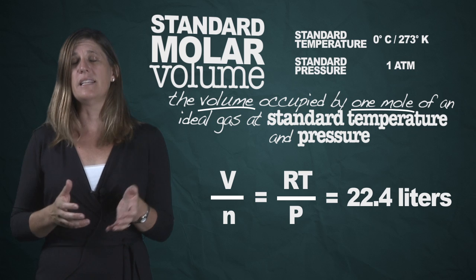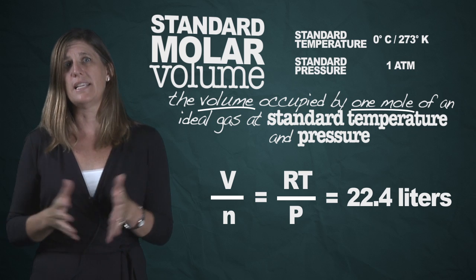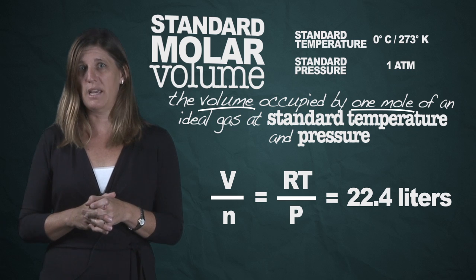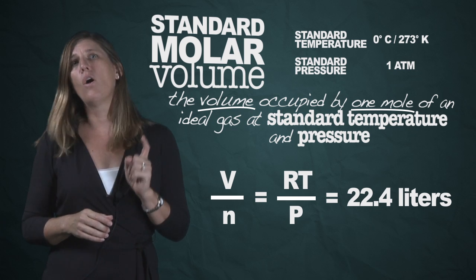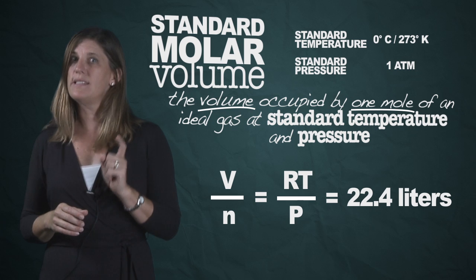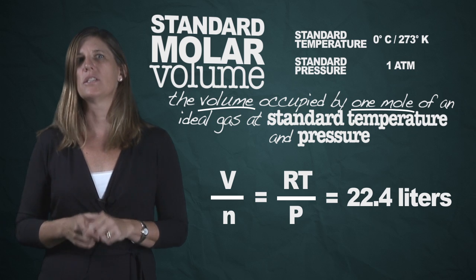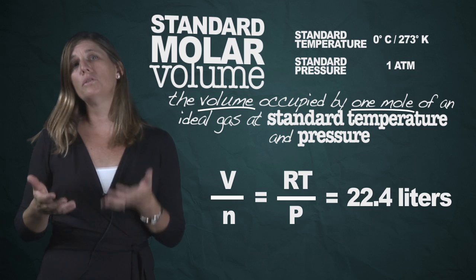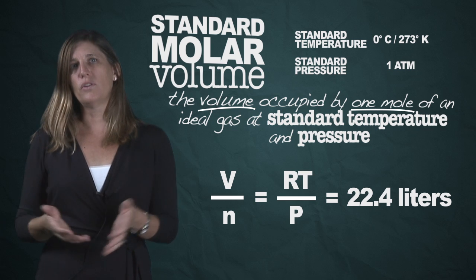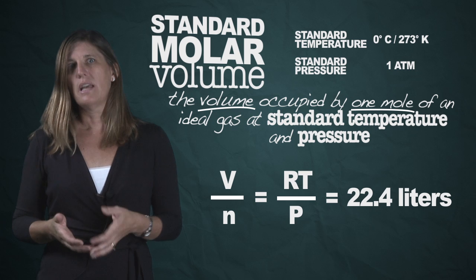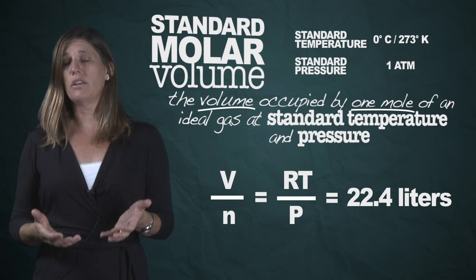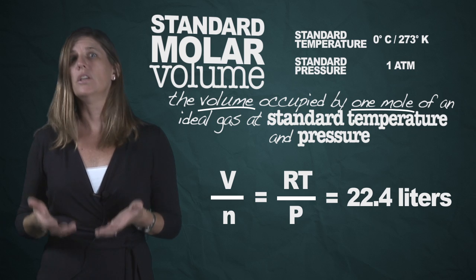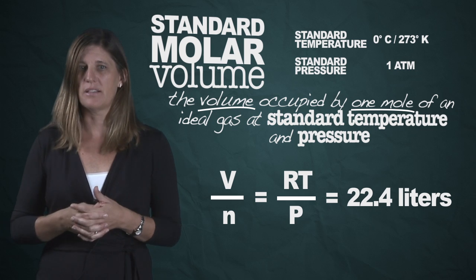So any ideal gas — one mole of any ideal gas — takes up 22.4 liters of space. Now, that only works if you are at standard conditions: standard temperature and pressure. If you change the temperature or you change the pressure, the volume of your gas is going to change. So if you want to calculate the volume of one mole of a gas at a different temperature or pressure, you're going to have to use the ideal gas law.